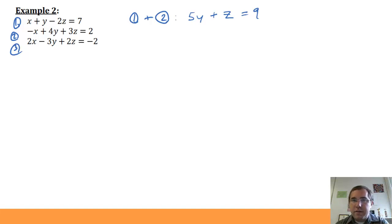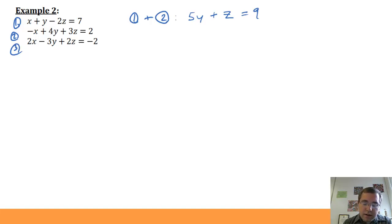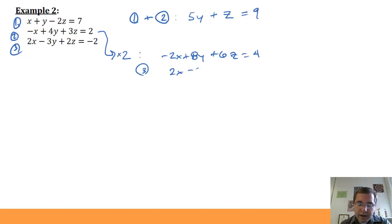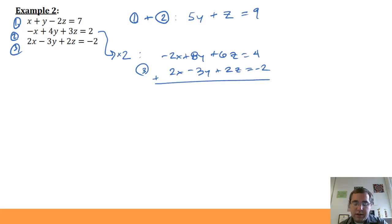Now I have one equation with only y and z. I need a second equation with only y and z. I multiply equation 2 by 2, giving negative 2x plus 8y plus 6z equals 4. Adding that to equation 3 — which has positive 2x — cancels the x's, giving 5y plus 8z equals 2.